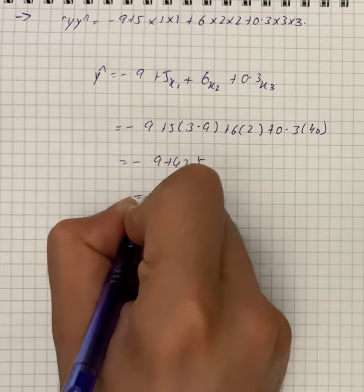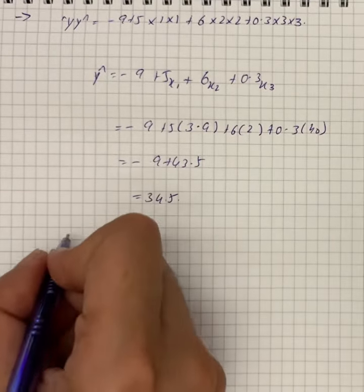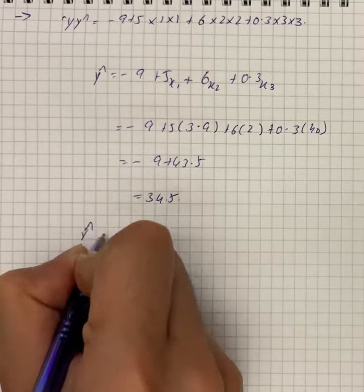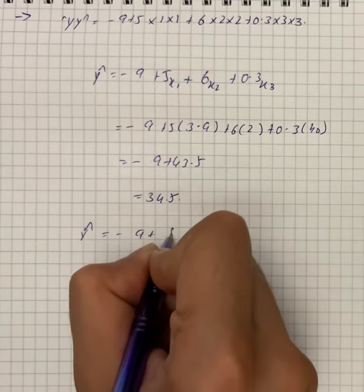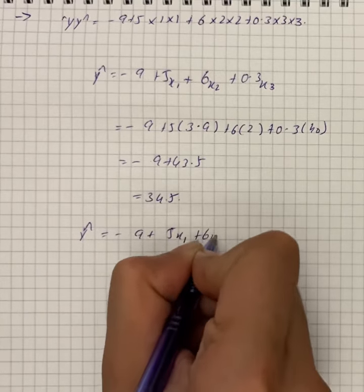.5, that is equal to 34.5. For the other condition, ŷ is equal to -9 + 5x₁ + 6x₂ + 0.3x₃.